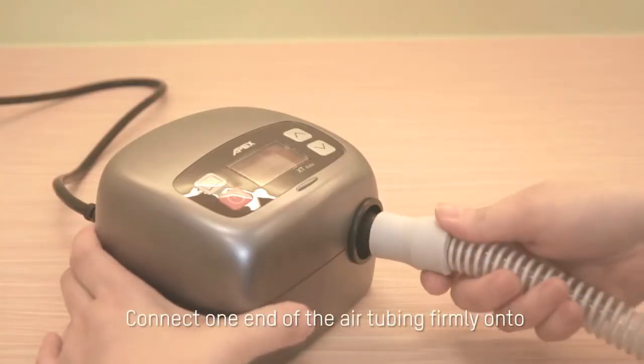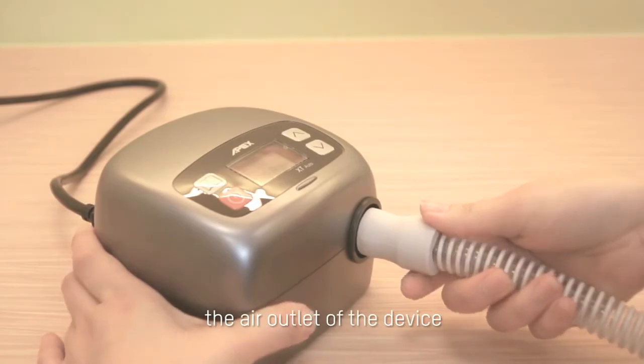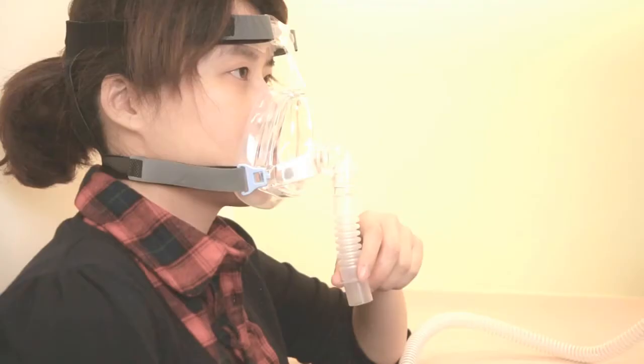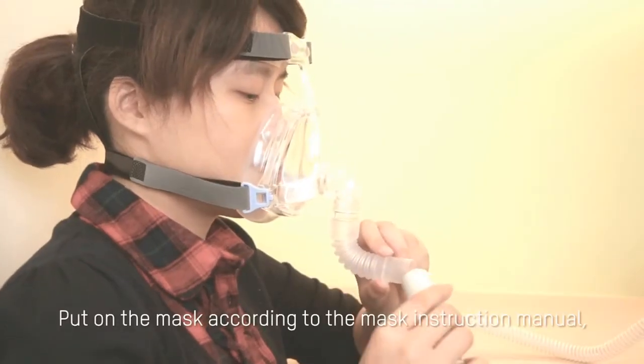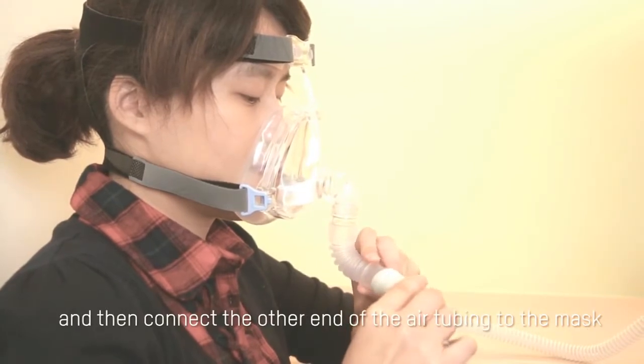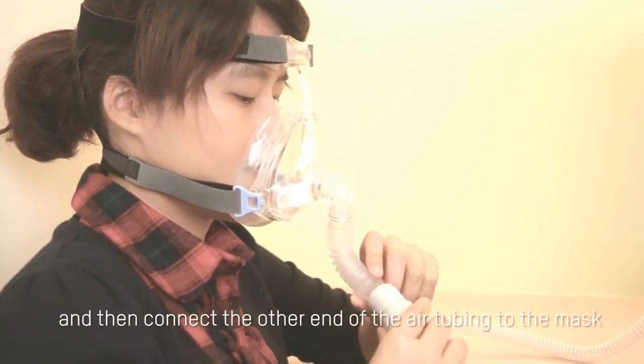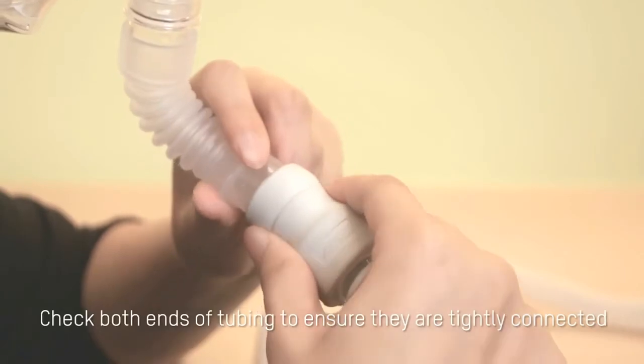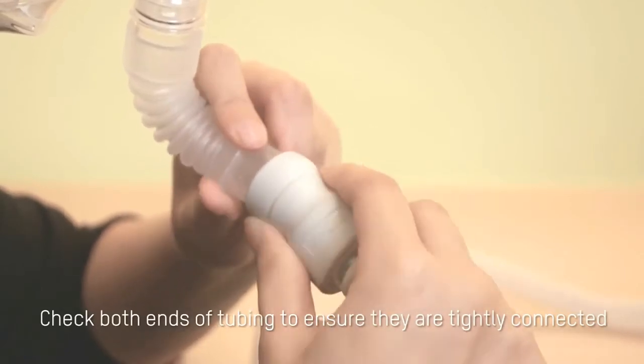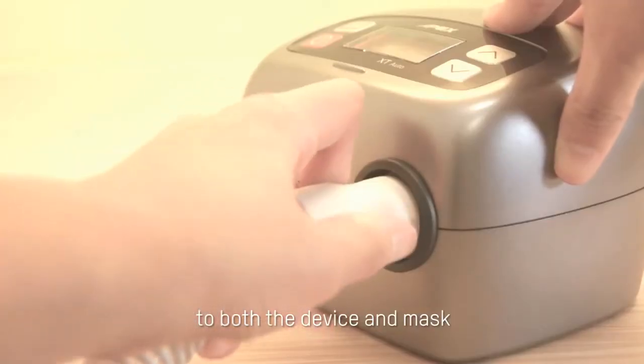Connect one end of the air tubing firmly onto the air outlet of the device. Put on the mask according to the mask instruction manual and then connect the other end of the air tubing to the mask. Check both ends of tubing to ensure they are tightly connected to both the device and mask.